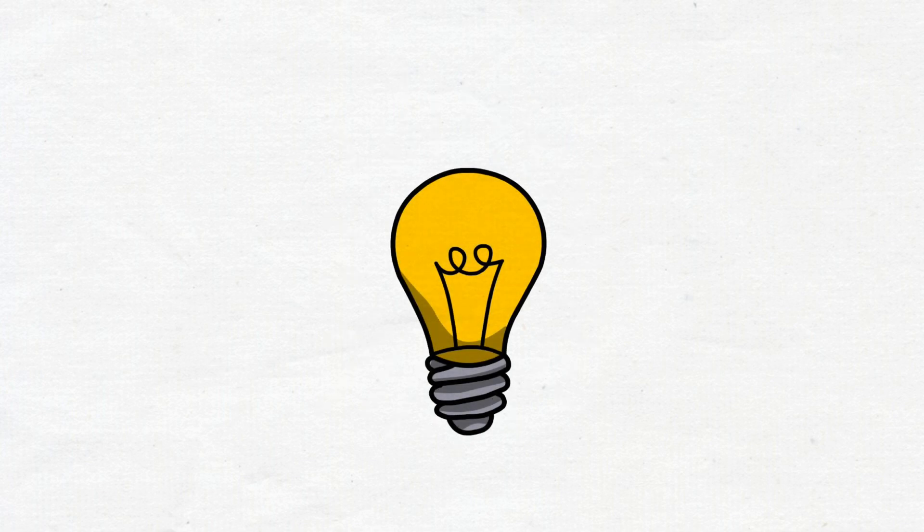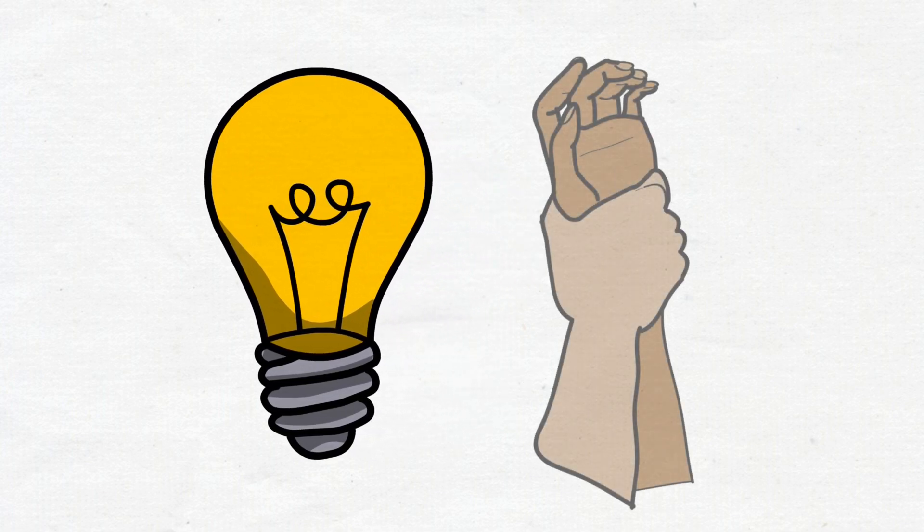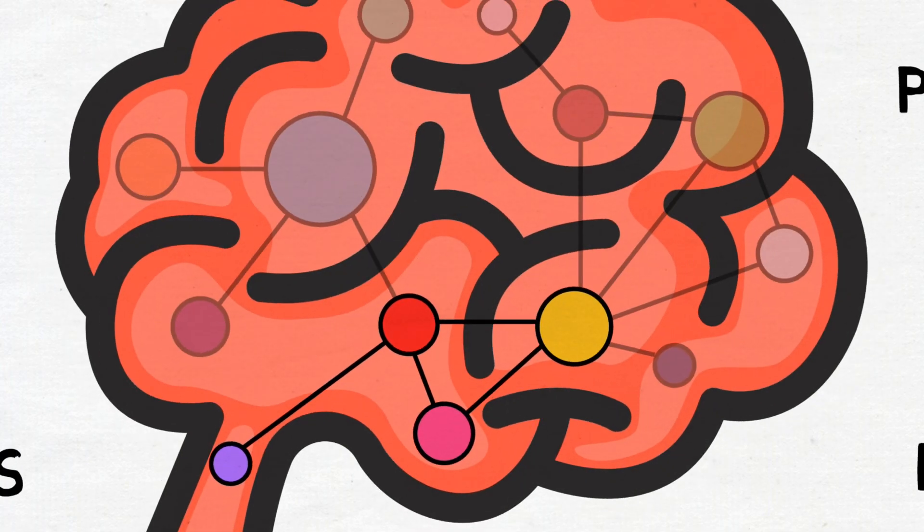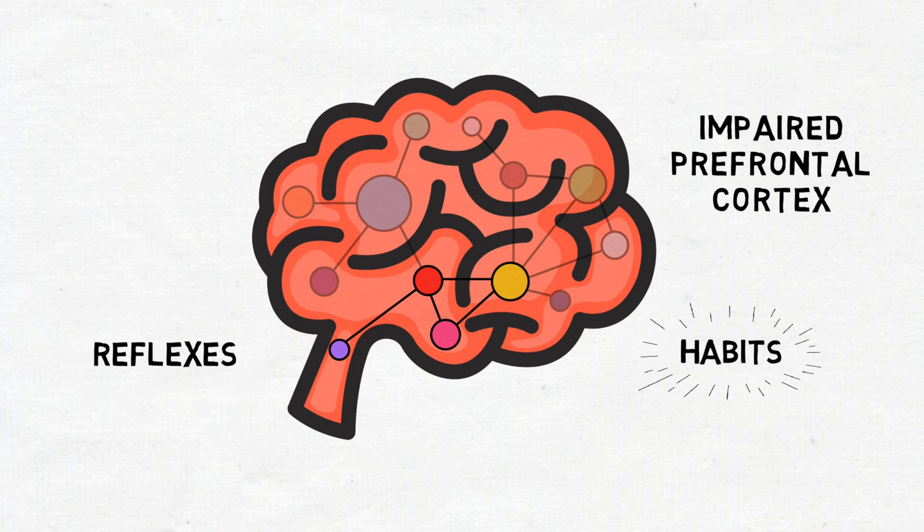If we want to understand the most common, brain-based behaviors many of us experience during sexual assaults, then we need to understand what happens when that defense circuitry dominates our brains and behaviors.